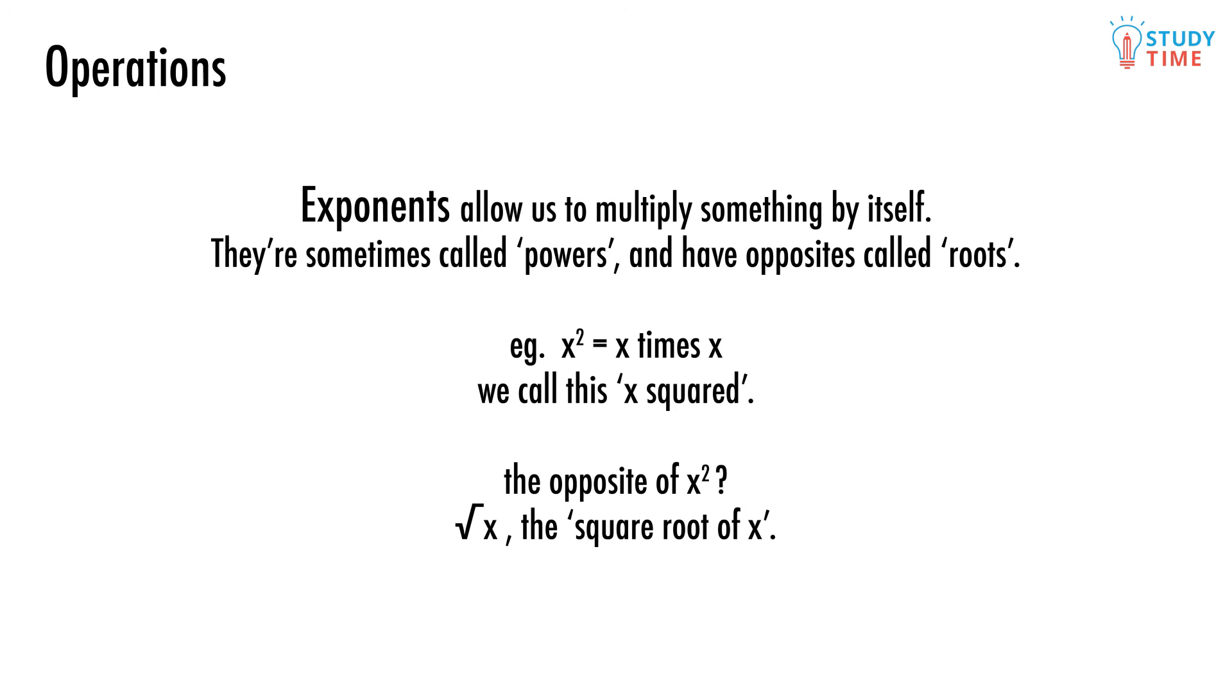Exponents are sometimes called powers, and have an opposite called a root. x squared is the same as x times x. The little two just says that two x's are being multiplied together. We call the little two the square.